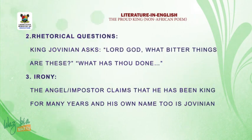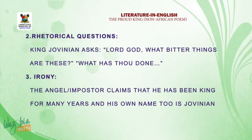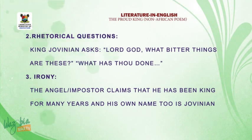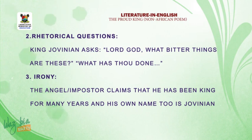We have the use of rhetorical question — a question that does not need any answer because the answer is embedded in the question. In the anguish of King Jovenian, he asks: 'Lord God, what bitter things are these? What hast thou done for me?' These are questions King Jovenian asks in agony and he does not need an answer.